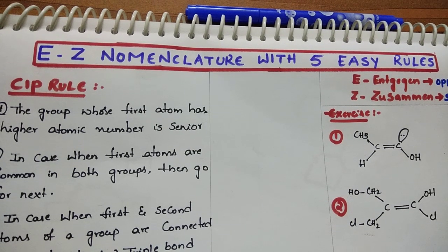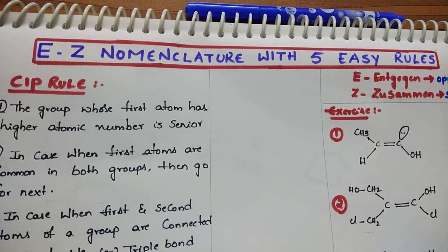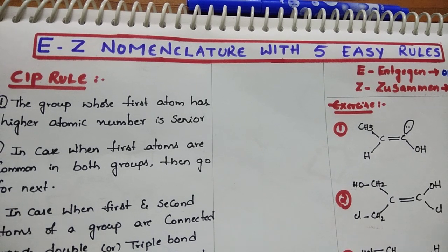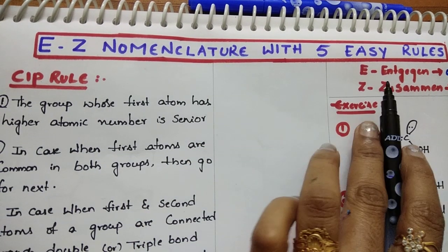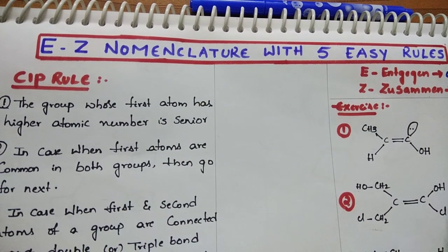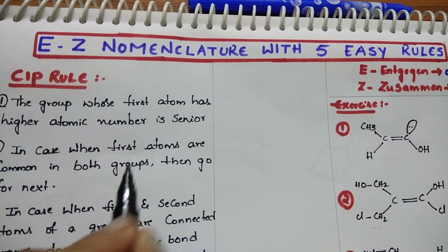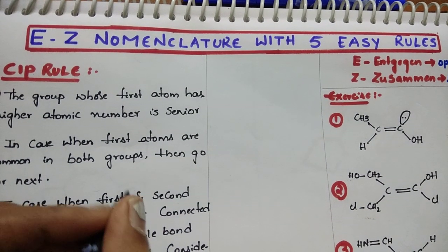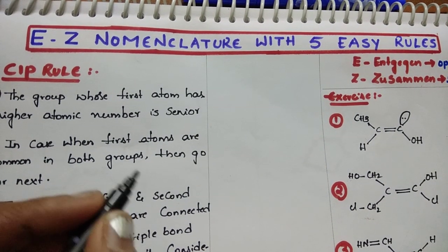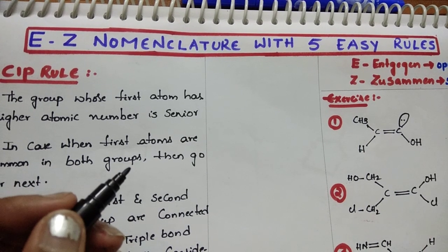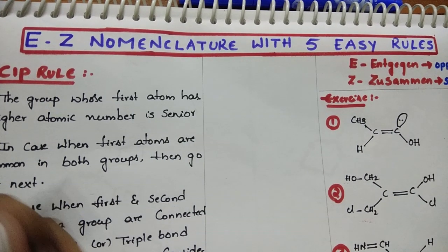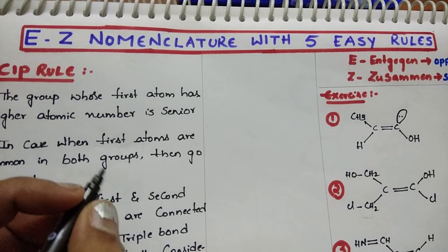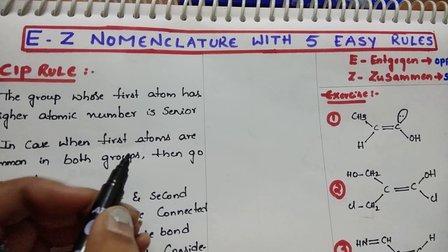Hi students, how are you? I hope you are doing well. Today my video is about E/Z nomenclature with 5 easy rules. Before going to start, I want to share that one of my videos got 1000 likes, so I am expecting more than 500 likes on this video. Then I will do one more excellent trick in my next video. Let's start our session.